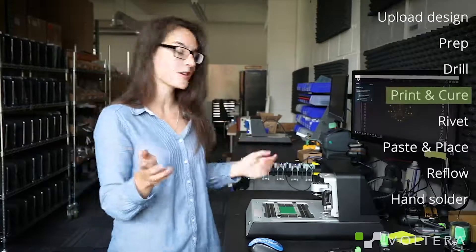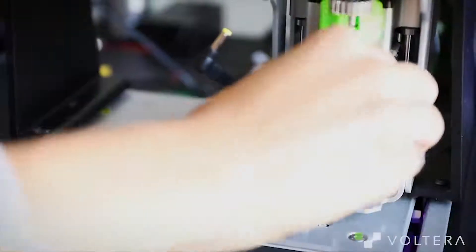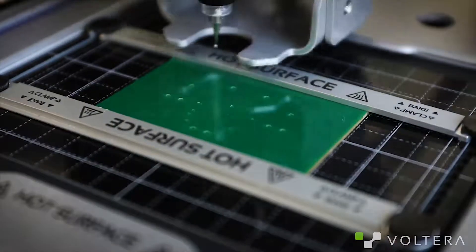All right, let's print some traces. Swap out the drill head for the ink dispenser, let it calibrate, and begin laying down conductive ink.